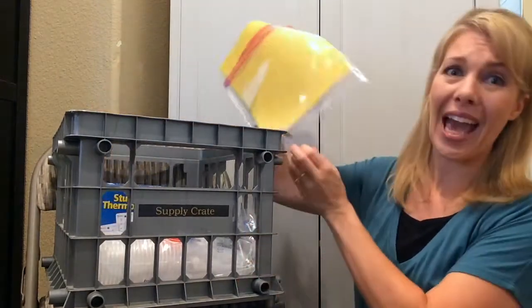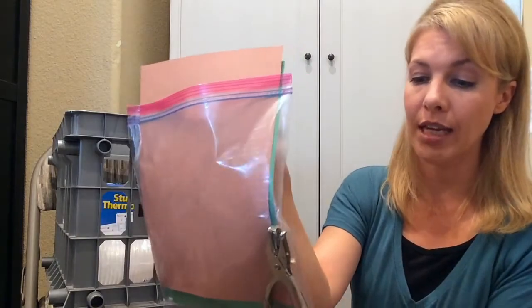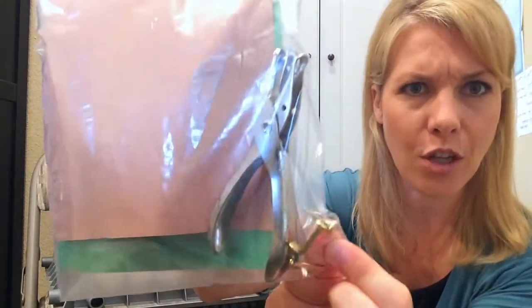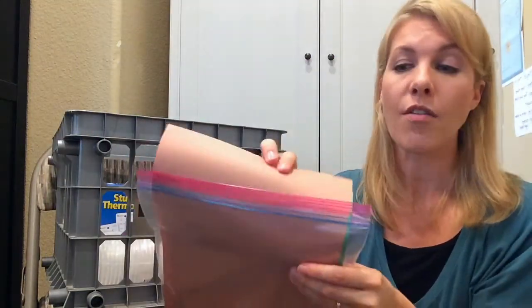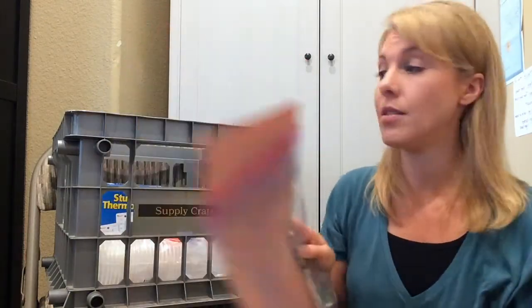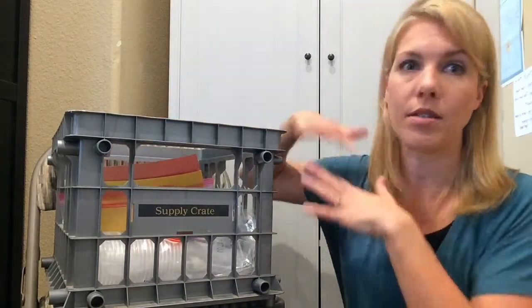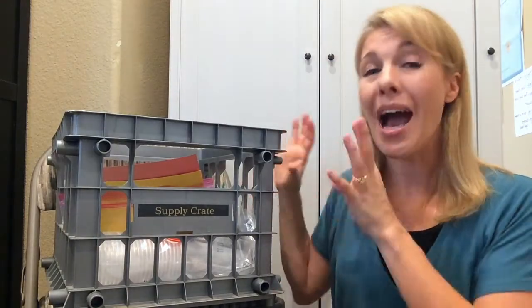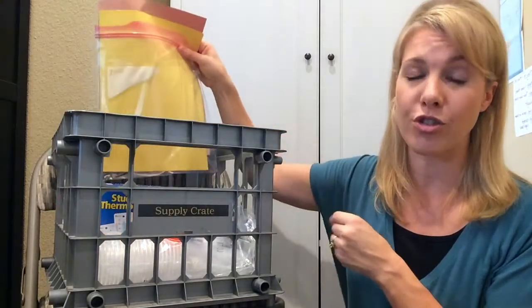So what I did is when she has an activity, I just put all of her stuff in a Ziploc bag. For this activity she needed some brads - is that what those are called? - those little things. She needed those, a hole punch, and four different colors of paper, so I put those in there for her. She can just grab this and easily do the assignment or activity without being all over the place and wasting a lot of her time.